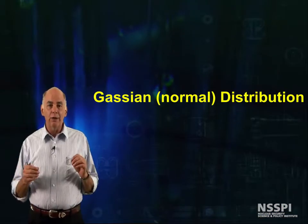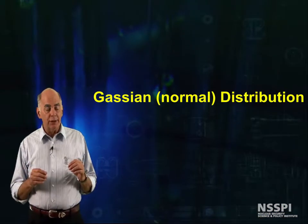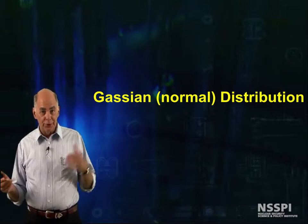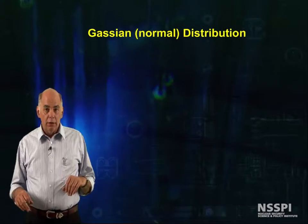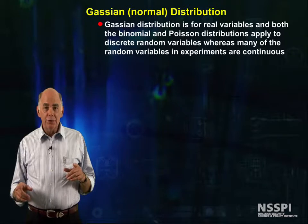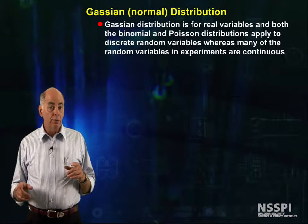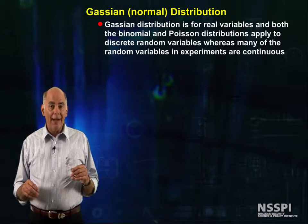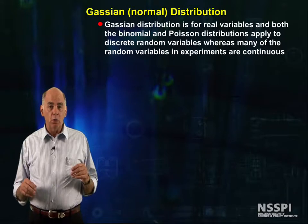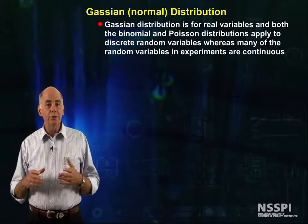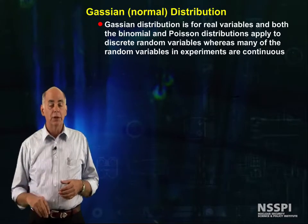What exactly is a Gaussian or a normal distribution? The first thing that's different is the Gaussian distribution is for real variables, whereas both binomial and Poisson distributions apply to discrete variables.